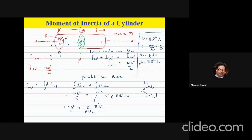Substituting the limits: the first term is l³/8 and the second term is minus of (−l/2)³, which is again −l³/8. Minus and minus become a plus, so I get 2l³/8. The first term from the perpendicular axis theorem stays as mr²/4.